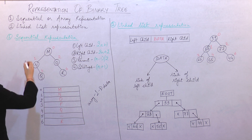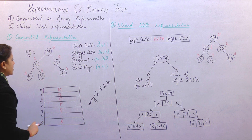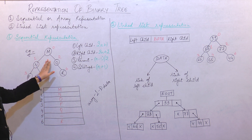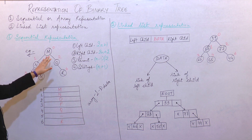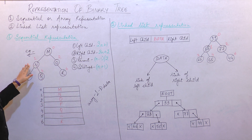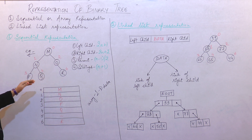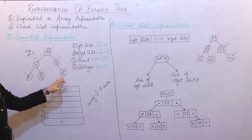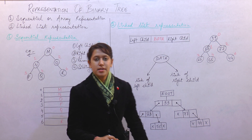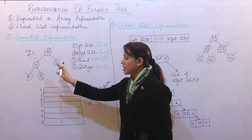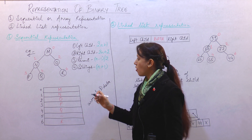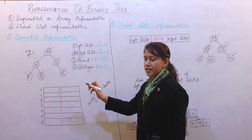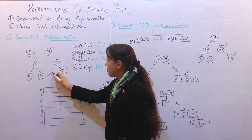So let's understand this sequential or array representation using this example. This is an example of a binary tree. Let's first check whether it is a binary tree or not. M is the root node. M is having two children N and O. Further, N is also having two children P and Q, and O is having R. Not a single node in this tree is violating the property of binary tree, so it is a valid binary tree.